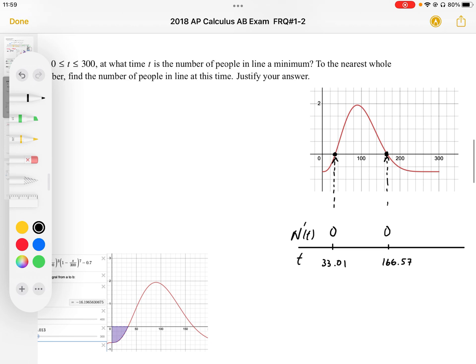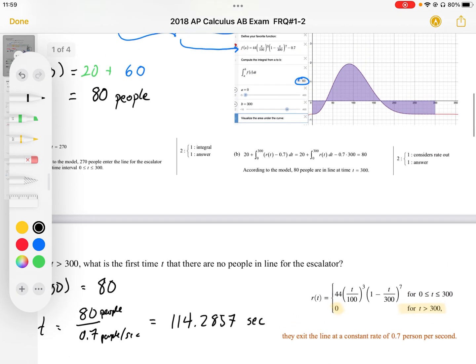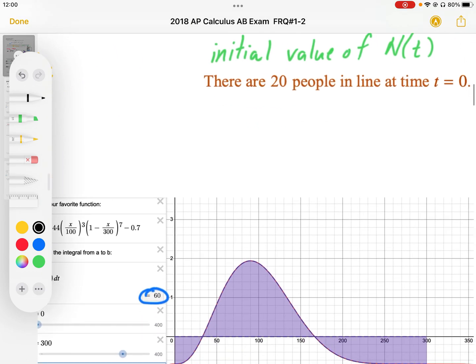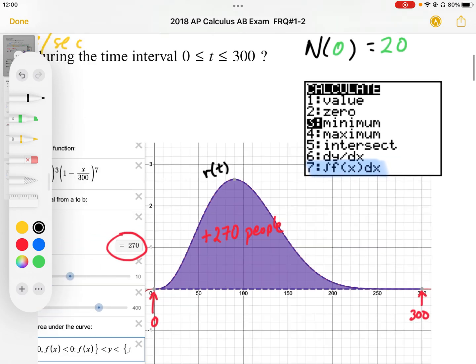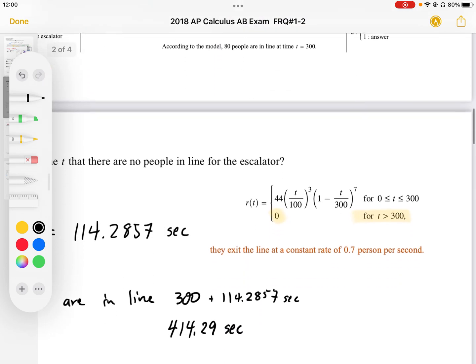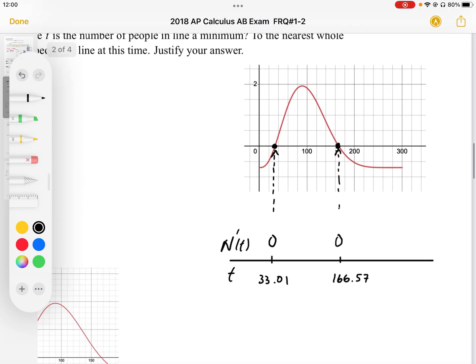We can solve this by taking that rate function that we graphed and we can solve for zeros. Solving for zeros, I can go back to the calculate menu, and it's going to be solving for zeros, which is number 2. So solving for zeros gives us those two points.